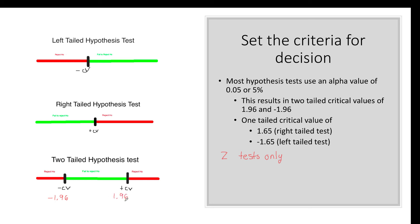If we are running a one-tailed test, we have a critical value of 1.65 for a right-tailed test and negative 1.65 for a left-tailed test.